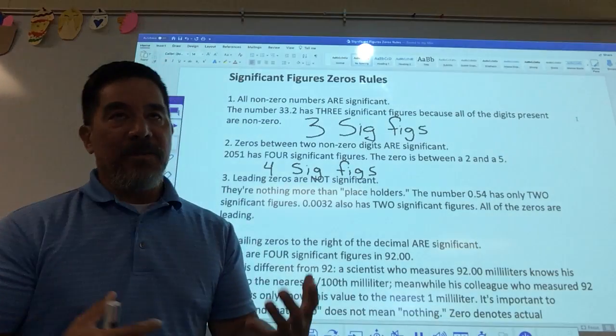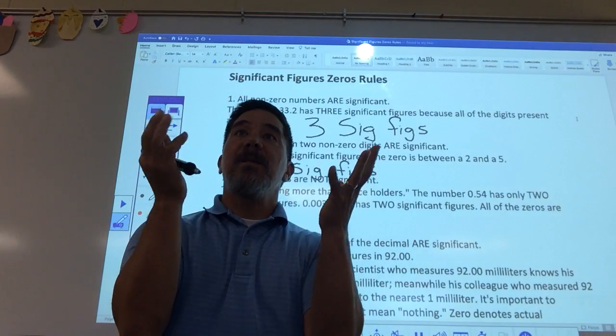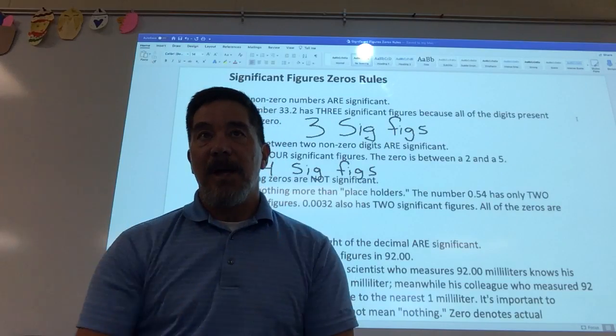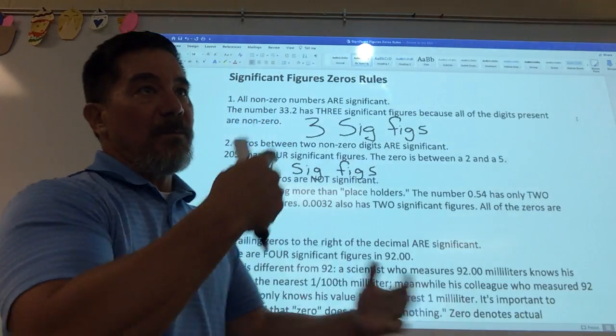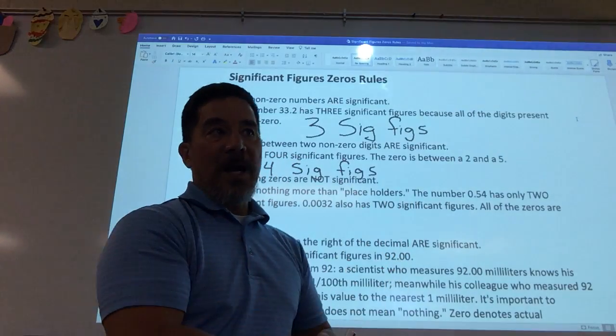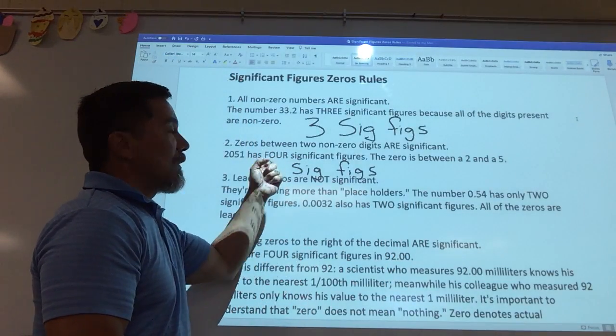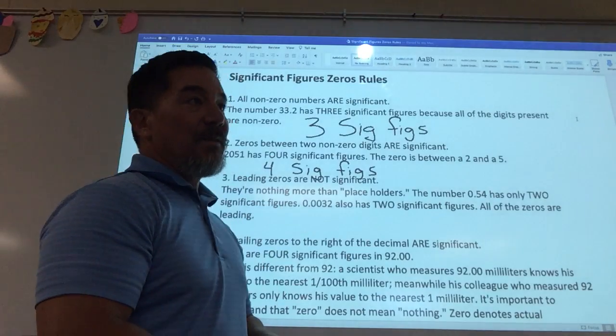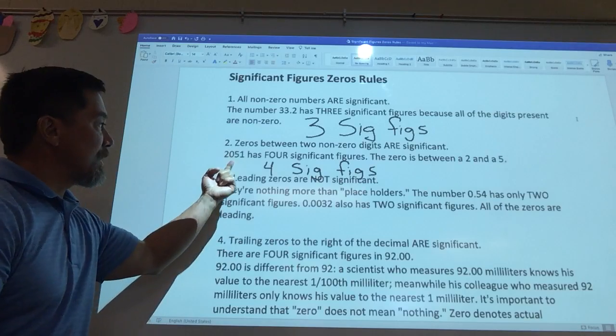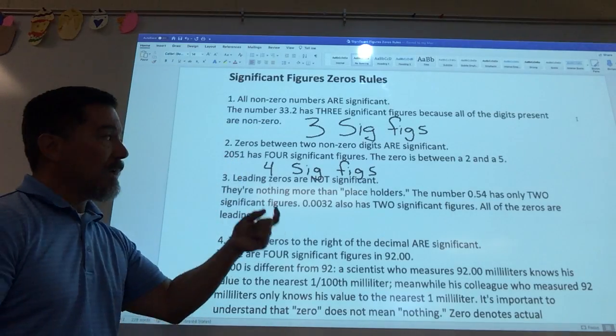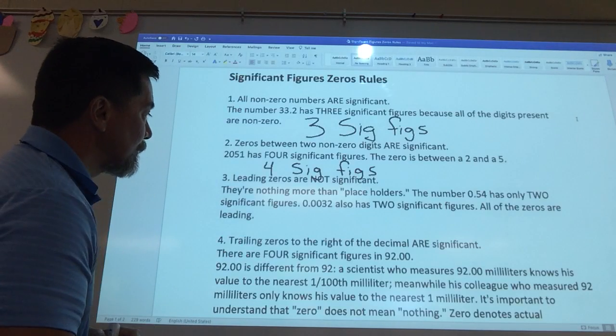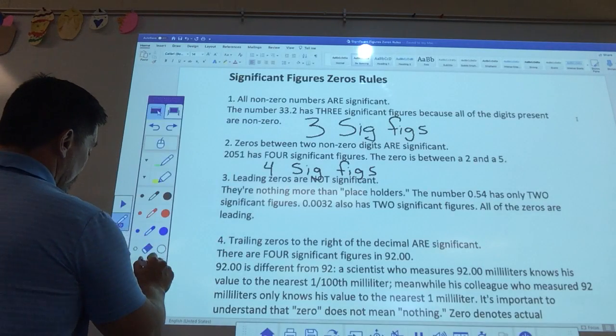So before we can do anything, we've got to be able to look at a number and pull the amount of significant figures out of that number and do that correctly. Before we can do any mathematical manipulation, multiplication, division, addition, subtraction, we have to know the significant figures of each individual number. So that's what we're starting to learn how to do. And 2051 has 4. The zero is in between the 2 and the 5. It counts.